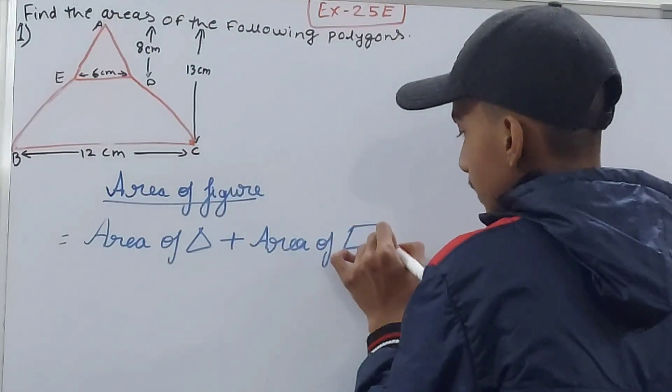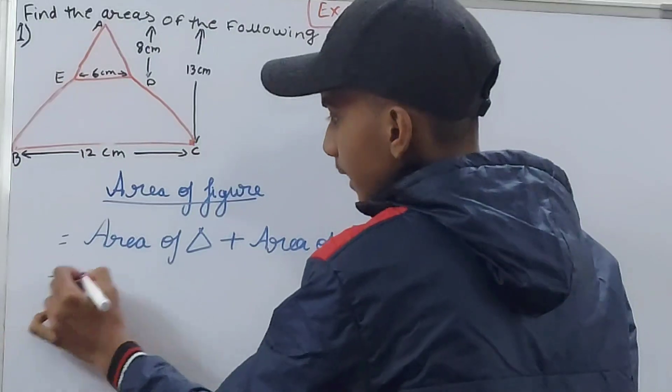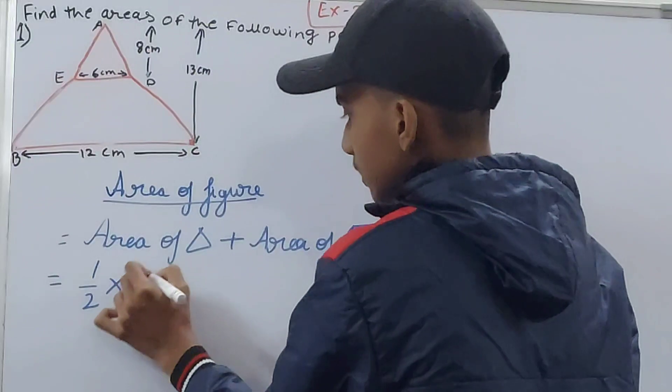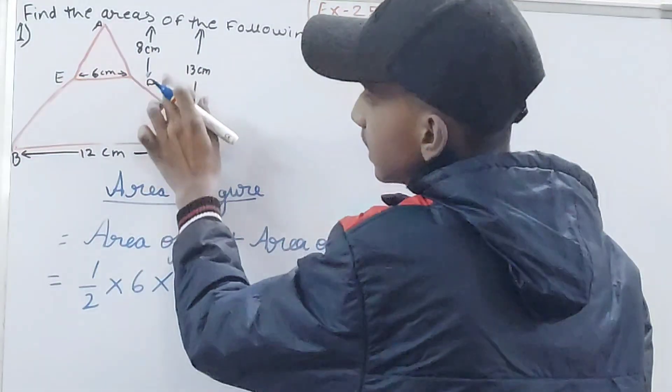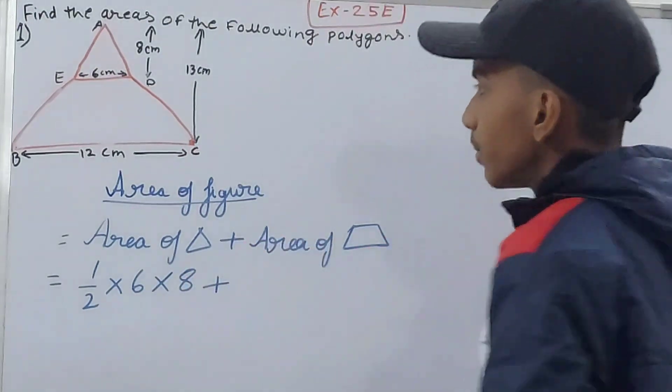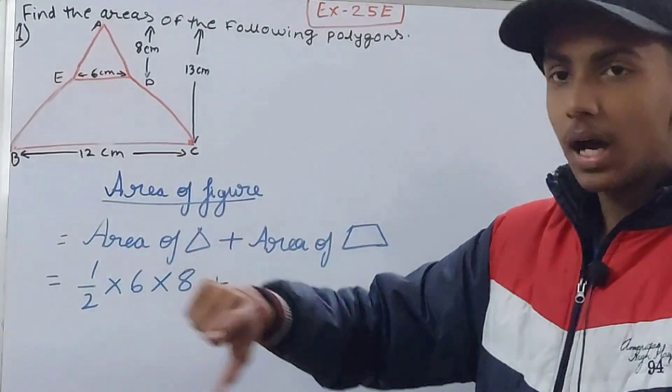Triangle is half base into height. Half, base is 6, so 6 here. Height, you can see this length, it is given 8 centimeters, so 8. Plus area of the trapezium.